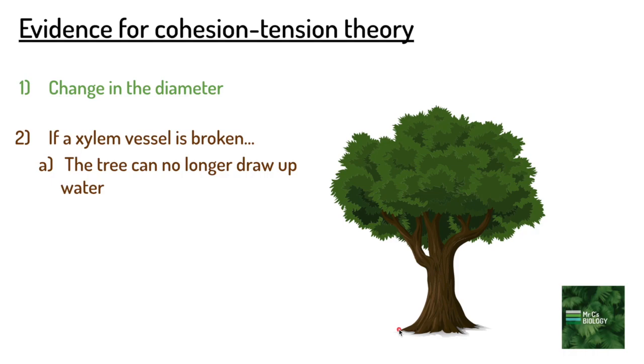If this mechanism was based on creating positive pressure rather than negative pressure and pulling—if it was a push mechanism—then when the xylem vessel was broken, we'd expect water to leak out of the tree, in the same way that blood leaks from a broken blood vessel because of pressure created by the heart.